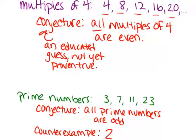So you can always prove that a conjecture is wrong with one example that goes against your conjecture. That's called the counterexample.